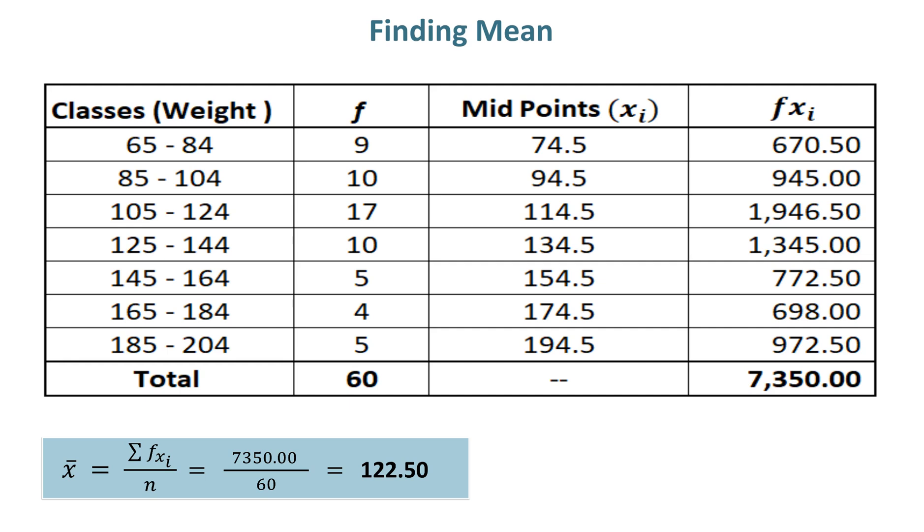In this way, you will find all midpoints of the remaining 6 classes. After finding all midpoints you will multiply with frequencies to get the product of fx, then add it to get numerator value in finding mean which is 7350 and denominator value is 60.